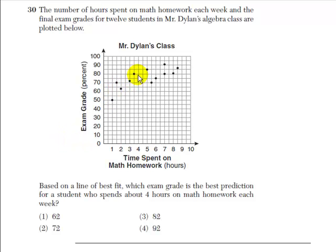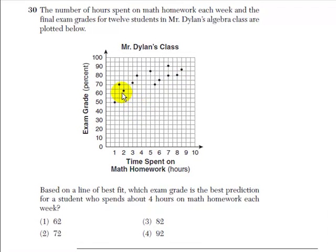There are 1, 2, 3, 4, 5, 6, 7, 8, 9, 10, 11, 12 points. Some of the points you're going to have to kind of guess what they are because they aren't on grid lines.